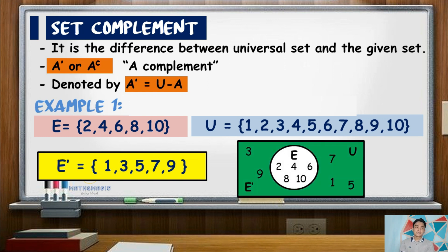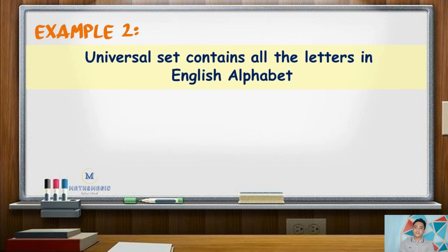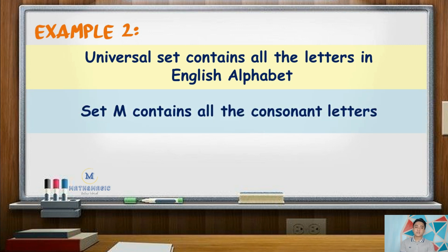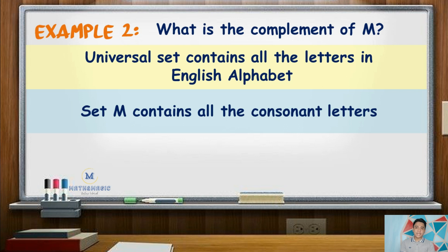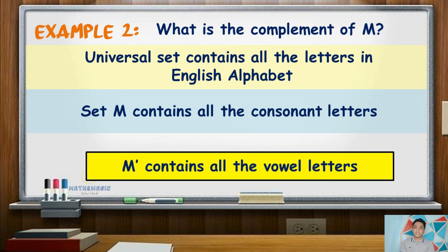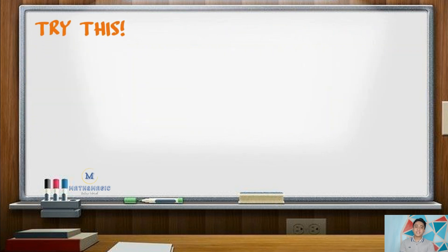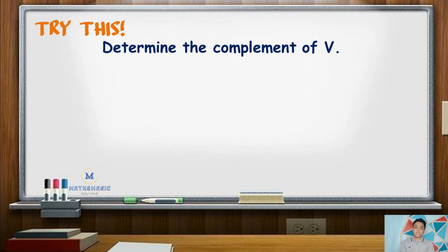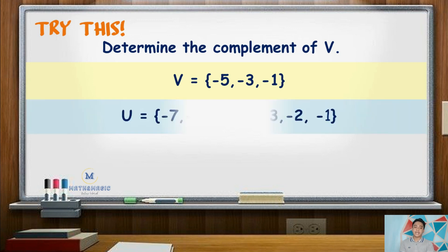Another example: say the universal set contains all the letters in the English alphabet, while set M contains all the consonants. Since the alphabet is composed of both vowels and consonant letters, if set M contains consonants, then the complement of M has the vowel letters A, E, I, O, and U. Now try this: determine the complement of V if set V contains the elements negative 5, negative 3, and negative 1, while the universal set contains negative 7, negative 6, negative 5, negative 4, negative 3, negative 2, and negative 1.